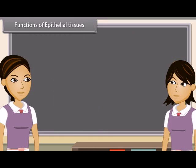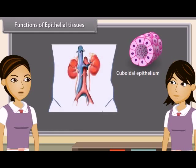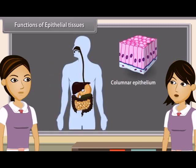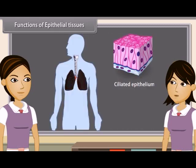Functions of epithelial tissues: Squamous epithelium protects the underlying parts of the body from mechanical injury, entry of germs, chemicals and also from drying. Cuboidal epithelium helps in absorption, excretion and secretion, and also gives mechanical support. The main function of columnar epithelium is absorption and secretion. The main function of glandular epithelium is secretion from glands. The rhythmic, concentrated beating of cilia of ciliated epithelium moves solid particles in one direction through ducts.